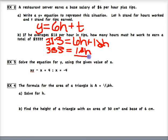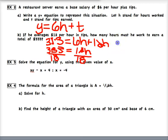Combining like terms on the right: 6h plus 12h is 18h. So 333 equals 18h. Divide both sides by 18. This is a word problem so decimals are allowed: h equals 18.5 hours. In order to earn $333, the server must work 18.5 hours.